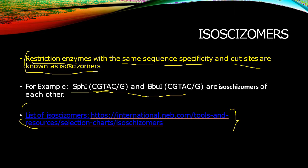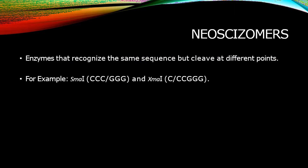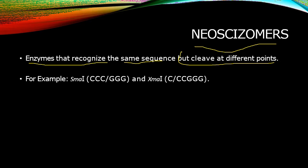Moving forward, let's talk about neoschizomers. Neoschizomers are enzymes that recognize the same sequence but cleave at different points. This is an important distinction — they have the same sequence as isoschizomers, but they cleave at different points.